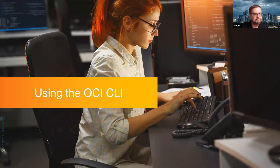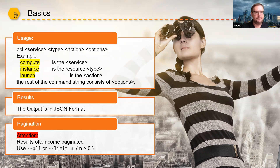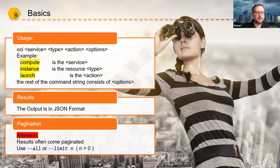How do we use the command line interface? The basic usage pattern is: you type OCI - that's the name of the binary - followed by a couple of options. The first option is the service, followed by the type, the action, and a couple more options. For example, if you say 'OCI compute instance launch', compute is the service, instance is the resource type, and launch is the action - so with this command, you are launching a virtual machine. The results of this command are in JSON format by default, and lots of results come paginated - Oracle shows you only a couple of results at one time, usually around five. You can work around that by using --all or --limit to set the pagination size.